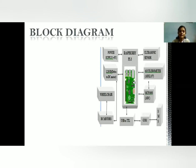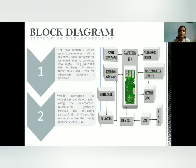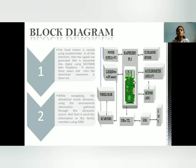The block diagram explanation is divided into two parts. The first part is when the head motion is sensed using the accelerometer in all directions; the signal generated is converted into a digital signal using the MCP3008, and then the Raspberry Pi processes these values and the wheelchair motion can be observed. The second part is when the wheelchair is in motion or navigating and encounters obstacles in the environment, detected by the ultrasonic sensor placed at the toe of the wheelchair.